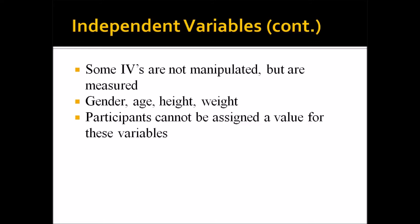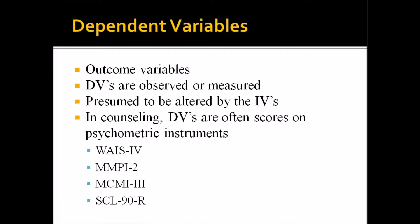Dependent variables are outcome variables — they are observed or measured. We presume that dependent variables are altered by the independent variables. In counseling, dependent variables are often scores on psychometric instruments such as the WAIS-4, the MMPI-2, the MCMI-3, and the SCL-90R — there are hundreds of others common in counseling research. When you're looking at a variable and asking whether it's independent or dependent, if it's the result of a measure, it's likely going to be a dependent variable.